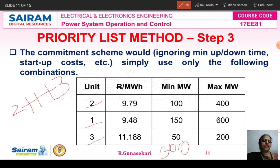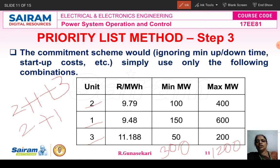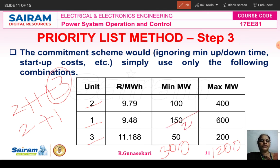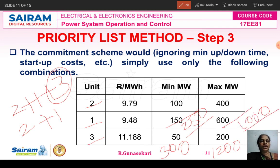The second combination is 2+1 — we remove unit 3 since it has the last priority. Only units 2 and 1 are synchronized. The minimum generation is 100+150 = 250 MW, and the maximum generation is 1000 MW. So the minimum dropped from 300 to 250 and the maximum from 1200 to 1000.